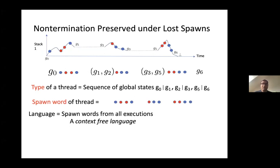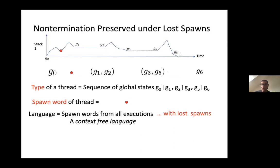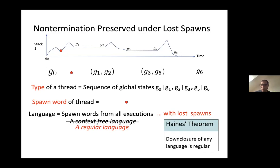The crucial observation is that when looking at non-termination, you can forget some spawns. It could be that you lose some spawns but still reach the target global state G6. Conversely, if there is a way to reach G6 having lost certain spawns, there is a corresponding run of the original system without losing those spawns that still reaches G6. So by losing spawns you create an over-approximation of system behavior that preserves the property of non-termination.